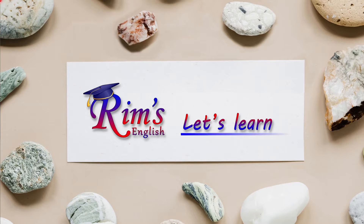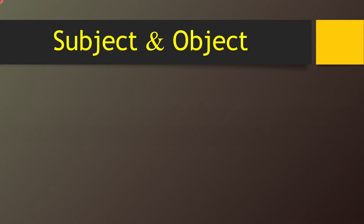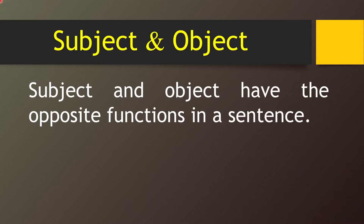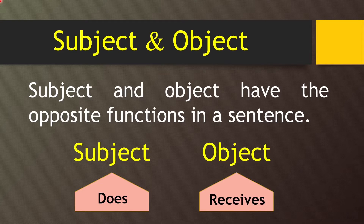Hello everyone, welcome back to RIM's English. Today we'll practice grammar and the topic is subject and object. Before I go to a detailed description of subject and object, I want to show you the basic difference between them. Subject and object have the opposite functions in a sentence — subject does, and object receives.